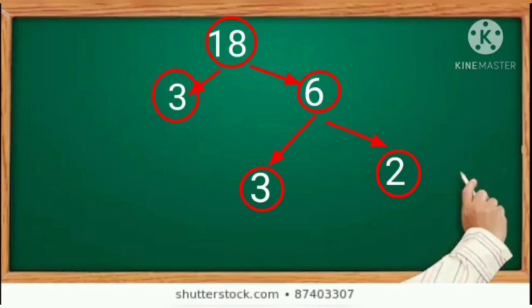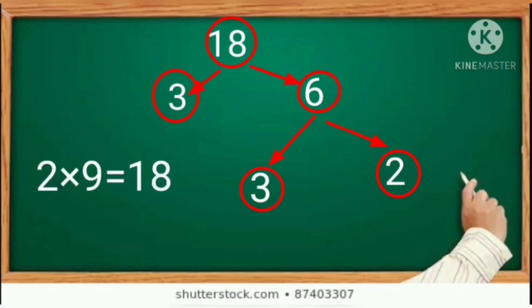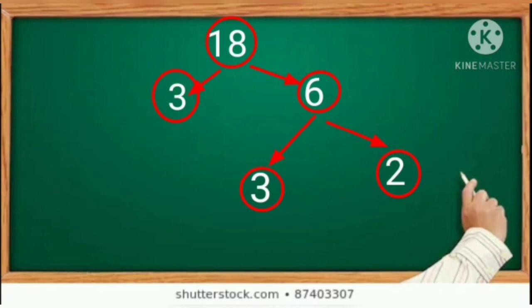So a factor tree can be written in different ways by taking different factors. By taking 3 numbers or by taking different factor combinations. Is it clear, children?